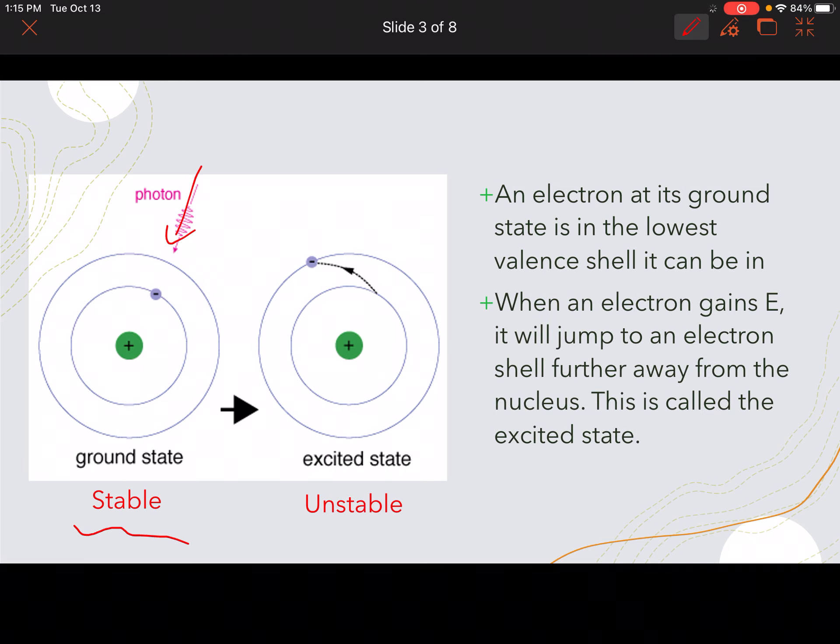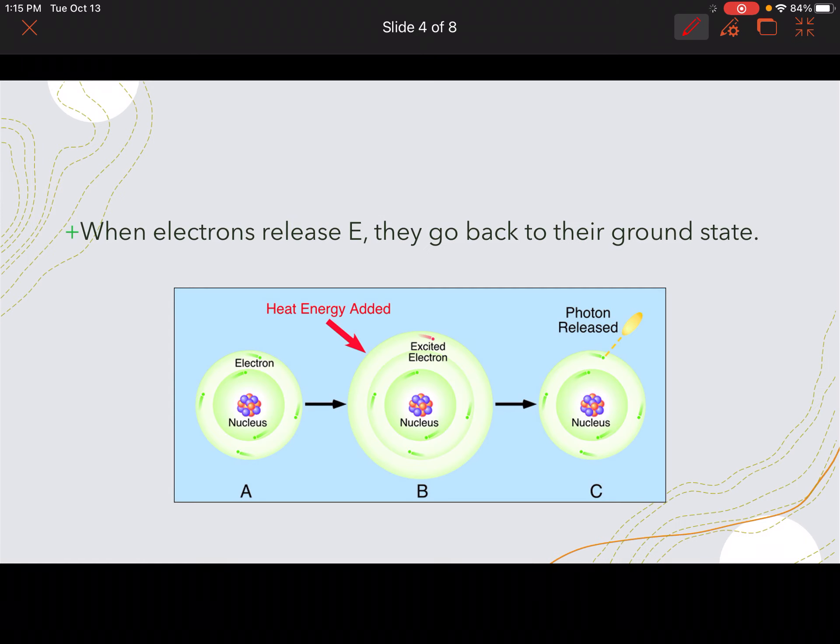So when an electron gains the energy, it jumps to an electron shell further away from the nucleus, and this is the excited state. So when it jumps farther away, that is going to be the excited state. And always remember, this is an unstable way for the electron to be, for the atom to be, and it wants to go back to its ground state.